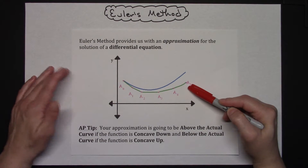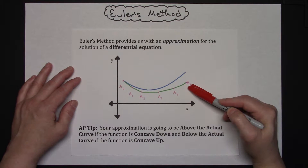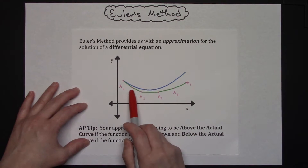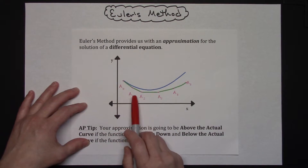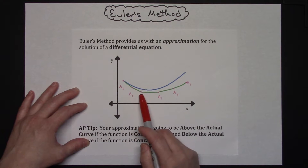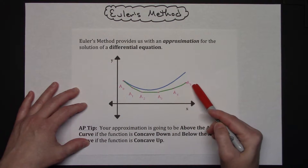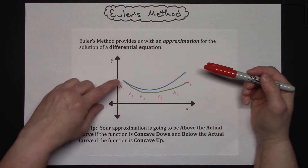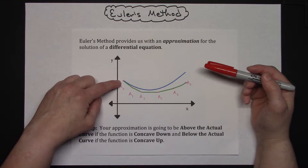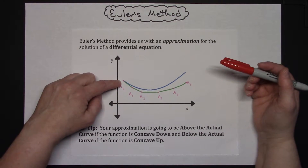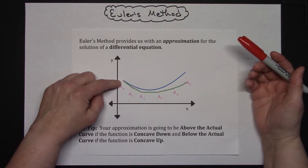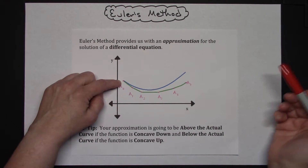Basically we're going to be generating points. Every time we do Euler's method, it's going to generate another point, and thus it's going to generate another line segment, and that's how we generate our approximation. We do have a starting point that the curve is going to pass through, and we will use that as our starting point to generate our new points.